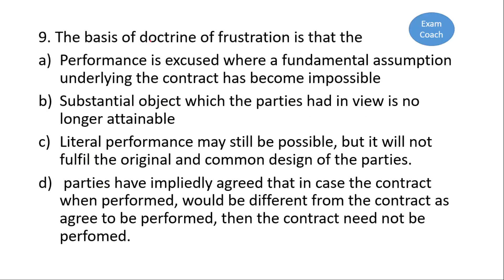The next question: what is the basis of the doctrine of frustration? The correct answer is option A — performance is excused where a fundamental assumption underlying the contract has become impossible. If the main object of the contract is lost, the contract is said to be frustrated and it becomes discharged, and nobody needs to perform their obligation.